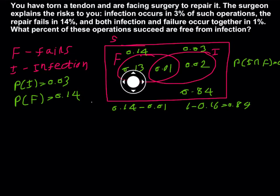So what is the 0.13? 0.13 is only failure. Probability of only failure is 0.13, probability of only infection is 0.02, very less, but both occurs 0.01. But this one, what is this? Actually, this is not failure and not infection. It means success and also infection free.